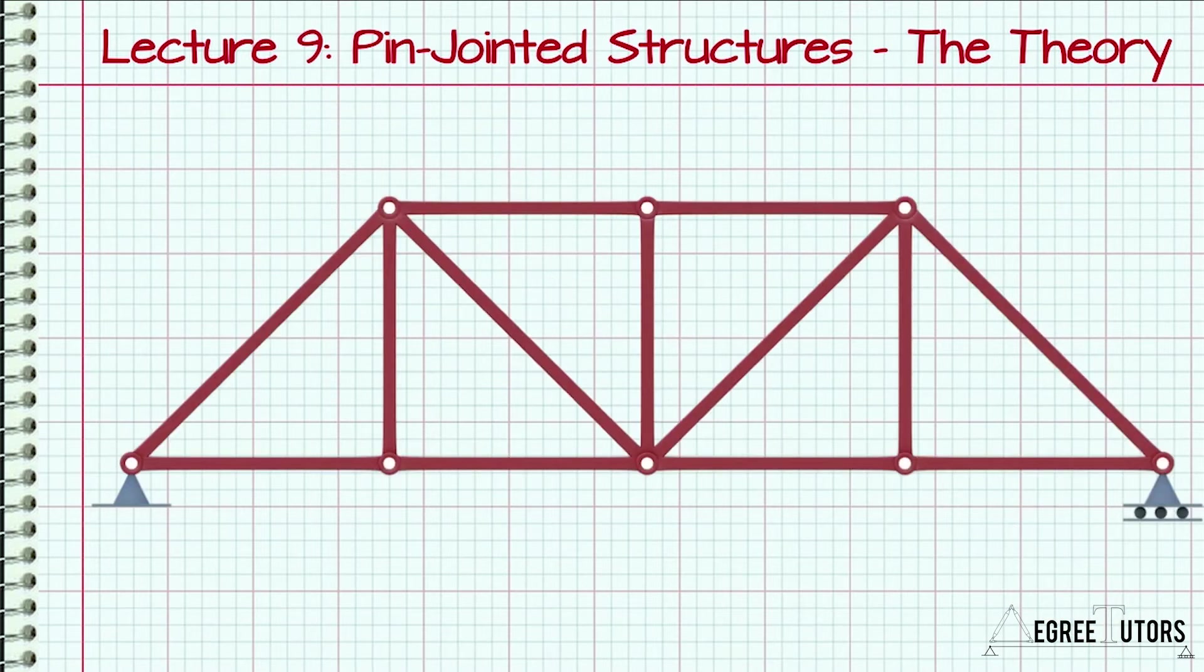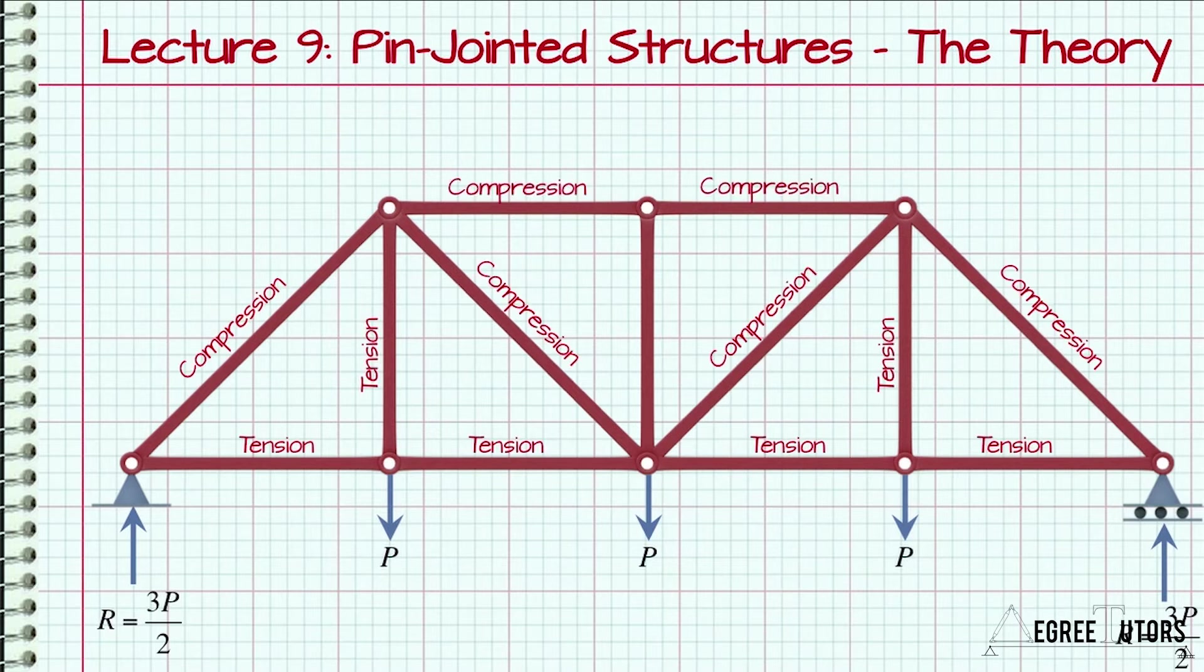If external loads are applied only to nodes, then the individual elements of the structure will only develop axial forces. This means they will be in a state of tension or compression, or they may not carry any axial load at all depending on the structural configuration. In any event, we assume unlike beams, the elements of a truss do not bend.